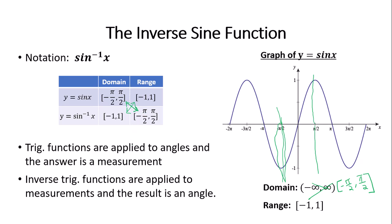The reason for this is that trig functions are applied to angles and the answer is a measurement. So I plug angles into the sine function and out comes some measurement from negative 1 to 1. Inverse trig functions are applied to measurements — in the case of inverse sine, they're applied to values from negative 1 to 1 — and then the result is an angle. We're working backwards: given a measurement, find the angle which produced it.